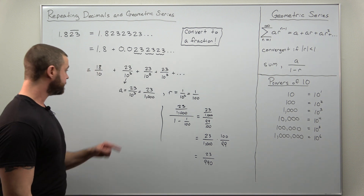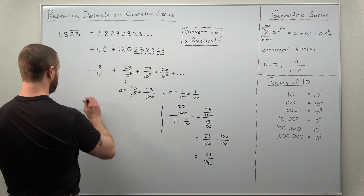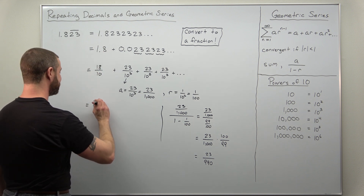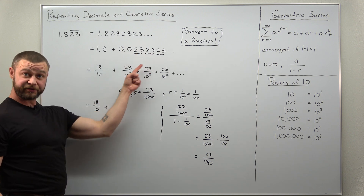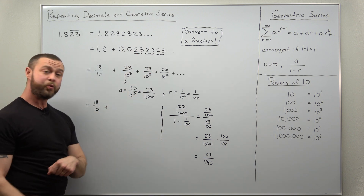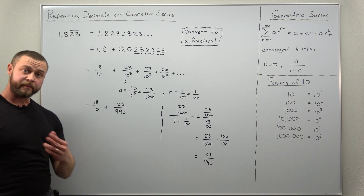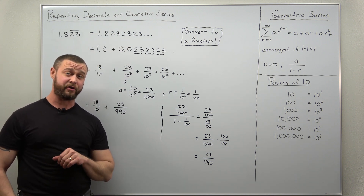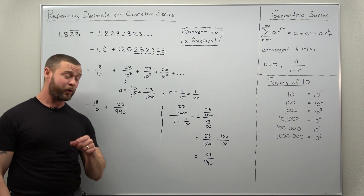That's basically most of the work — the conversion of this repeating decimal to a fraction. We make use of that here: we have 1.8 converting to 18 over 10, and we just now converted this repeating decimal part to 23 over 990. To express our repeating decimal as a single fraction or rational number, we're just going to use a common denominator, and it looks like 990 will work.